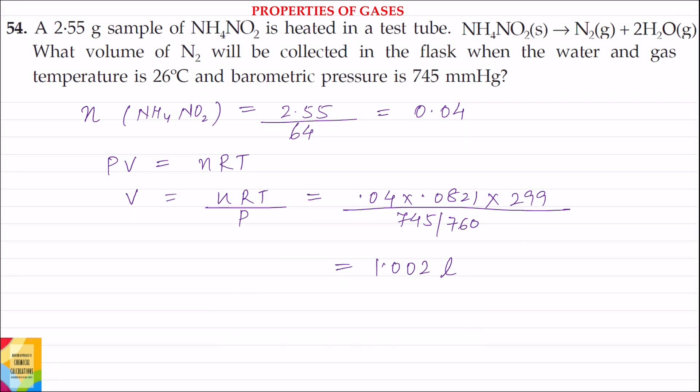Question 54. A 2.55 gram sample of NH4NO2 is heated in a test tube. The equation for the reaction is NH4NO2 solid on heating forms N2 gas plus 2H2O. This is also in gaseous form.